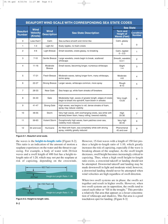Downwind takeoff and landing may be made downswell in light and moderate wind. However, a downwind landing should never be attempted when wind velocities are high, regardless of swell direction. When two swell systems are in phase, the swells act together and result in higher swells. However, when two swell systems are in opposition, the swells tend to cancel each other or fill in the troughs, providing a relatively flat area that appears as a lesser concentration of whitecaps and shadows. This flat area is a good touchdown spot for landing.